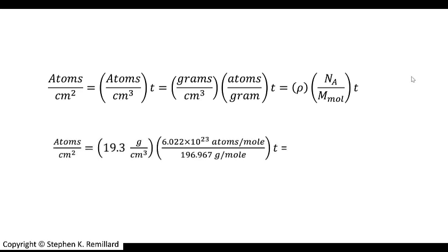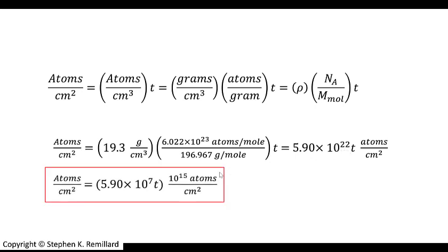Let's put numbers in. The density of gold is 19.3 grams per cubic centimeter. There's Avogadro's number. There's the molar mass of gold, 196.967 grams per mole, and t. Multiply all these numbers, and you've got an expression. Atoms per square centimeter is this number times t, the thickness. Now we can find the thickness of the gold layer if we have the atoms per square centimeter. In SimNRA, the units are 10 to the 15th atoms per square centimeter. 10 to the 22 is 10 to the 7 times 10 to the 15th, so atoms per square centimeter is 5.9 times 10 to the 7th times the thickness in centimeters in units of 10 to the 15th atoms per square centimeter. Write down this box, and let's go back to SimNRA.